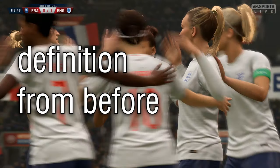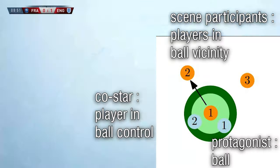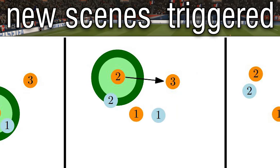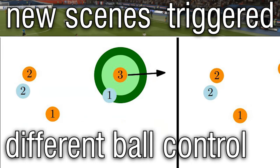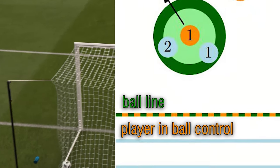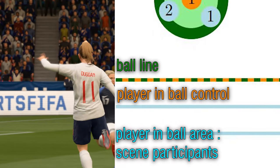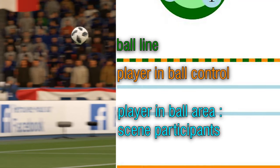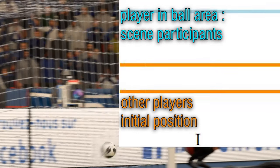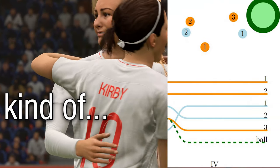Let's take the definition from before. The ball is the protagonist and participates in every scene. New scenes are triggered by changing the player in control of the ball — this is the main character. For example, through a pass, the ball line is drawn on this player's line. Players in the direct ball vicinity — the scene participants — are drawn under the line of the protagonist. All other player lines remain in the initial position. So everything is set and ready to go.